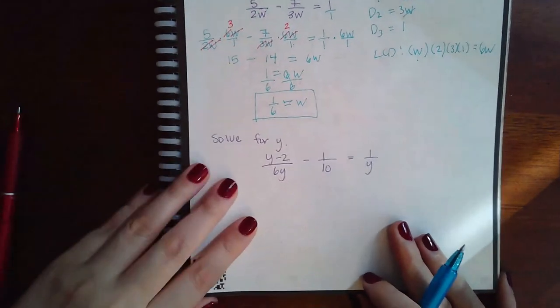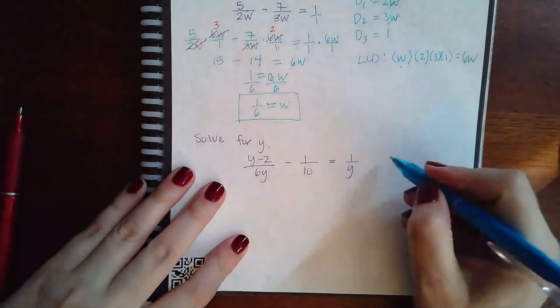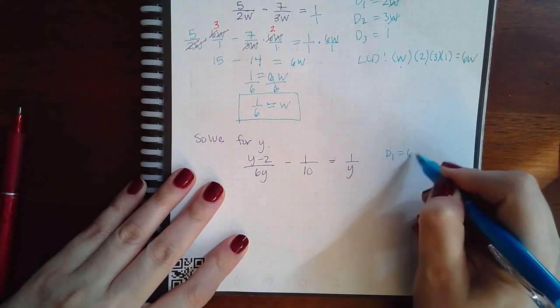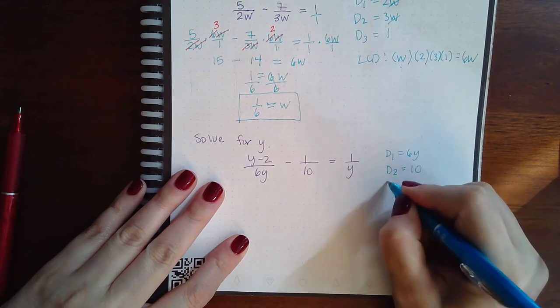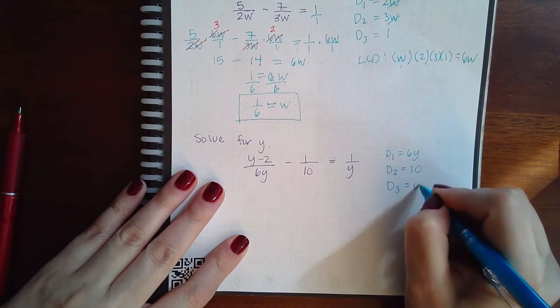So now we have this example here. So denominator 1 is a 6Y. Denominator 2 is a 10. Denominator 3 is a Y.